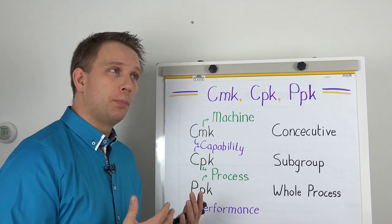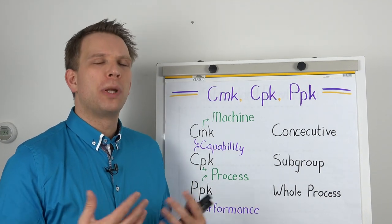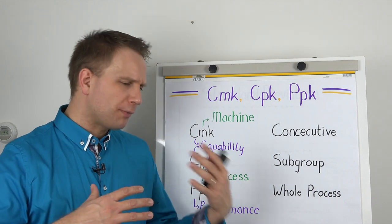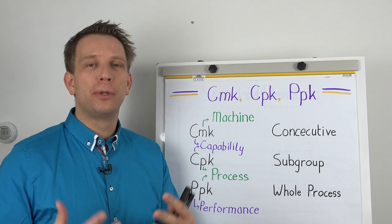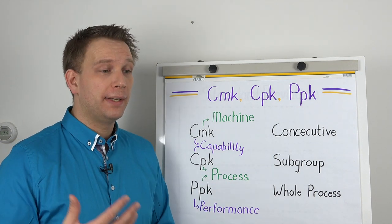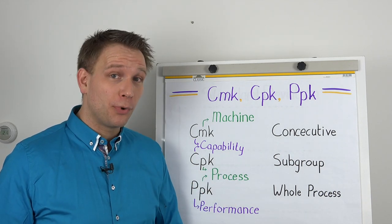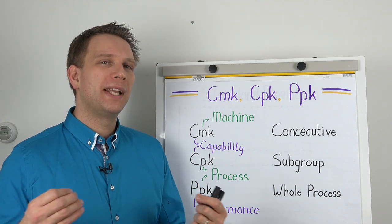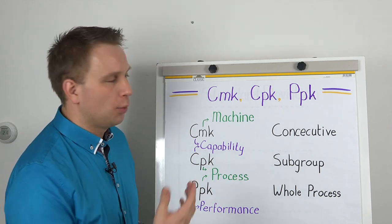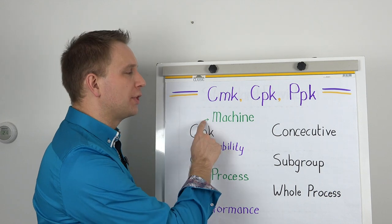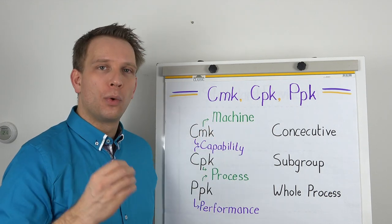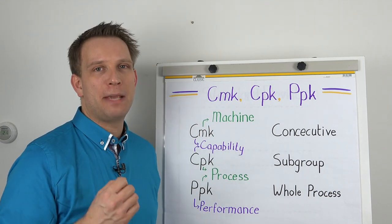So in a process capability, we would like to include things that happen around the machine, like different operators, maybe a batch change, material changes, all within our standard process, but more than just the machine. And with the CMK, we try to really isolate what the machine is capable of.